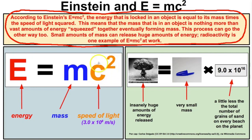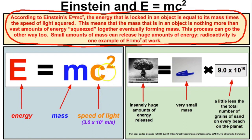The speed of light is the fastest thing in the universe — 3.0 times 10 to the eighth meters per second. If we square this really huge number, we get 9.0 times 10 to the 16th, which is an insanely huge number — just a bit less than the total number of grains of sand on every single beach on this planet. So if we multiply this huge number by even the smallest amount of mass, we still end up with huge amounts of energy.